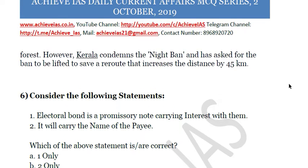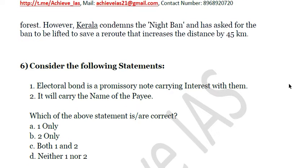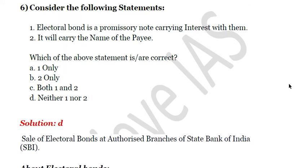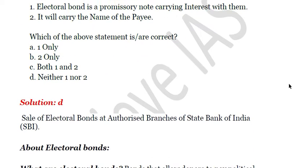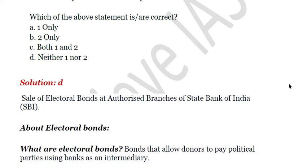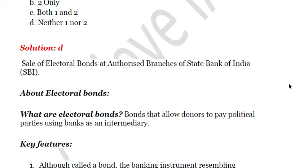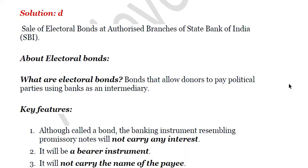The next question: consider the following statements. First, an electoral bond is a promissory note carrying interest. Second, it will carry the name of the payee. Which of the above statements is correct? Both statements are wrong — the answer is D, neither one nor two. Electoral bonds were recently in the news as they started at authorized branches of the State Bank of India. These are bonds that allow donors to pay political parties using banks as an intermediary.